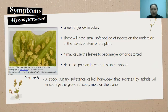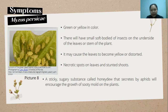The symptoms: the aphids are usually found on the underside of the leaf or the stem of the plant, causing the leaves to become yellow or distorted, with necrotic spots and stunted shoots. The sticky sugary substance called honeydew secreted by aphids also encourages the growth of sooty mold on the plants, which reduces photosynthesis of the eggplant.